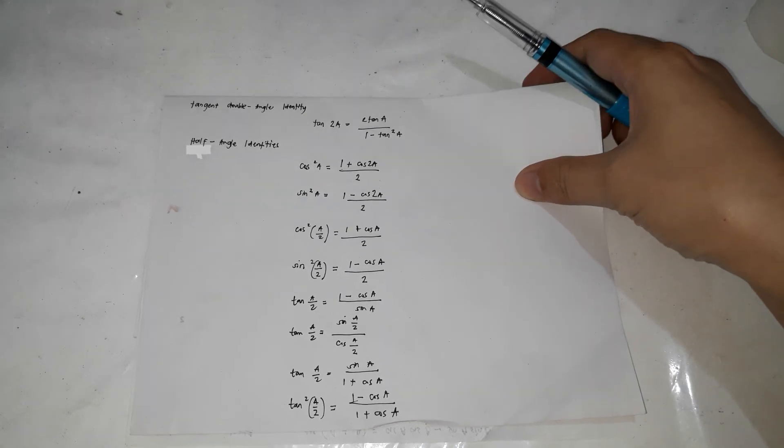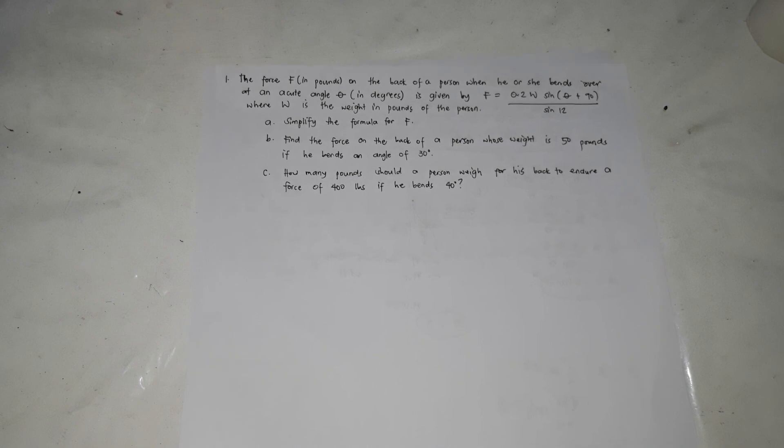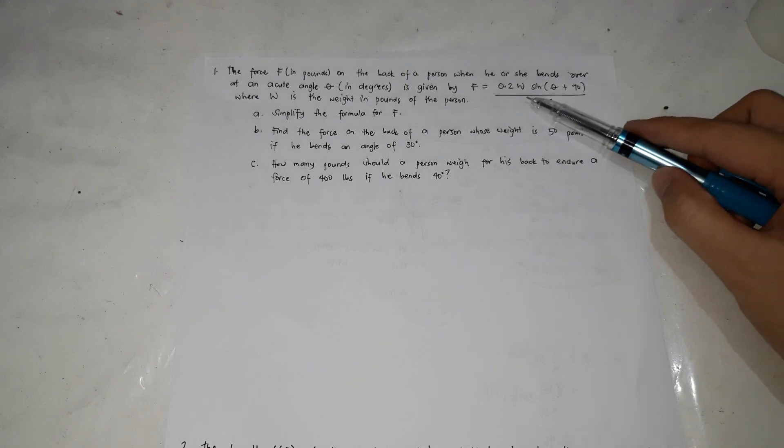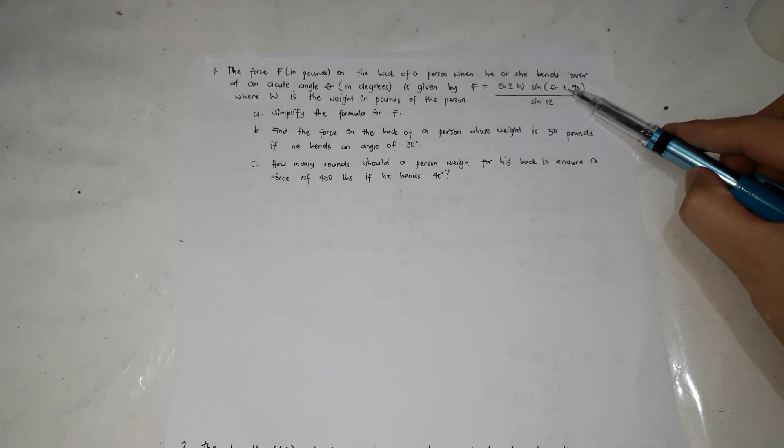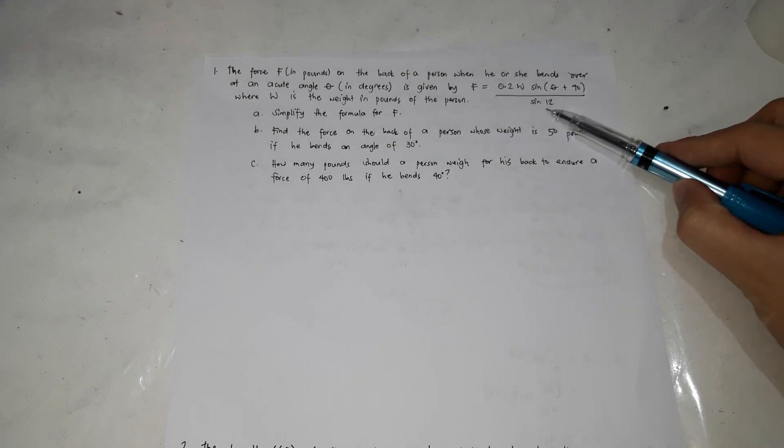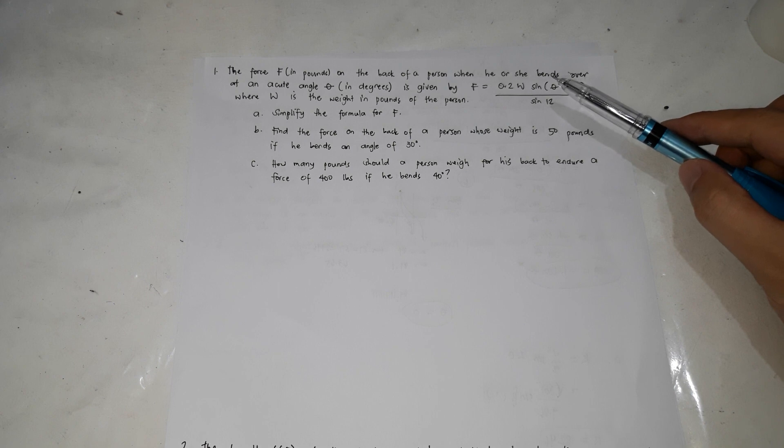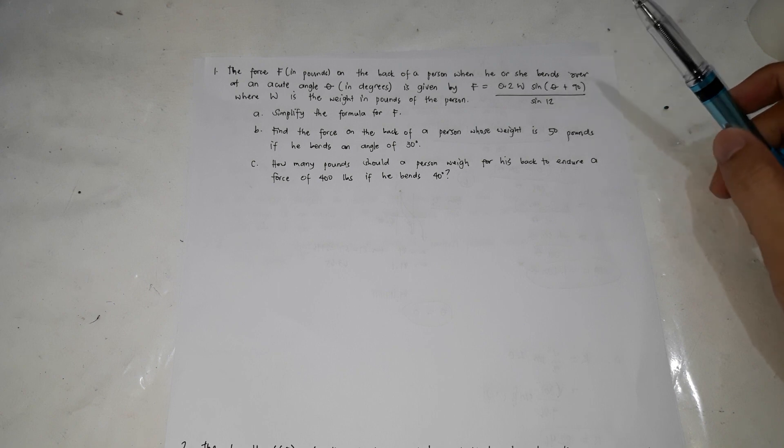Here are the problems we're going to solve. We have three problems. The first one: the force F in pounds on the back of a person when he or she bends over at an acute angle in degrees is given by F equals 0.2W sine(theta plus 90) over sine 12, where W is the weight in pounds of the person.